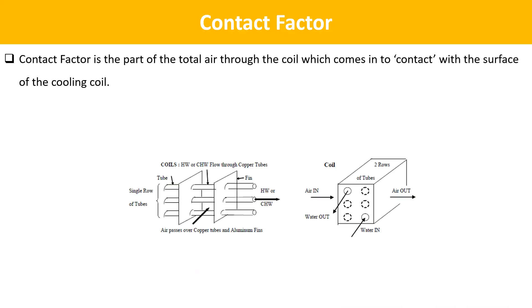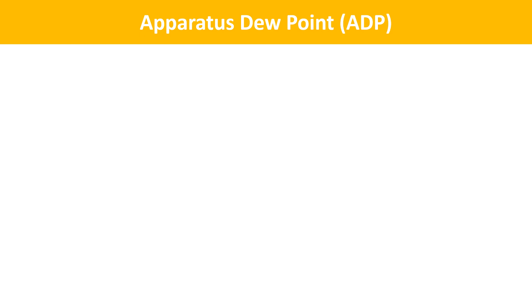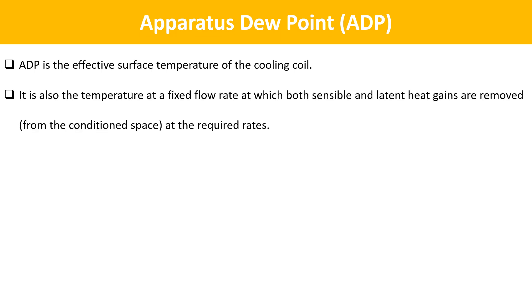The next term is Contact Factor. Contact factor is the part of the total air through the coil which comes into contact with the surface of the cooling coil. The next term is Apparatus Dew Point. ADP is the effective surface temperature of the cooling coil. It is also the temperature at a fixed flow rate at which both sensible and latent heat gains are removed from the conditioned space at the required rates. It is also often called the coil temperature.